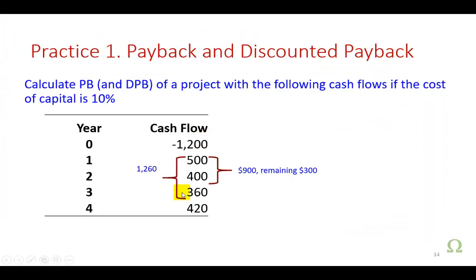Here is a practice problem for you. The initial cost is $1,200 and you're given the cash flows. The first two years produce $900, but the first three years total $1,260, exceeding the cost. You need to figure out how much is left after the first two years — which is $300 — and that $300 comes out of the third-year cash flow of $360 to give you the fractional year. You can also verify using the financial calculator.